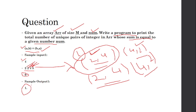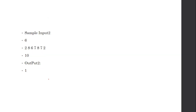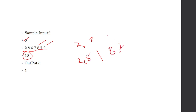Now let's see the second example. This is the array, and the num value is 10. You can form (2, 8) which gives 10, and (8, 2) which also gives 10. Again these are treated the same way.